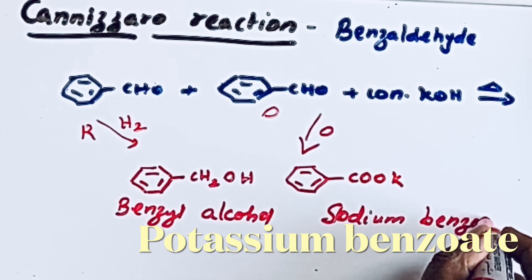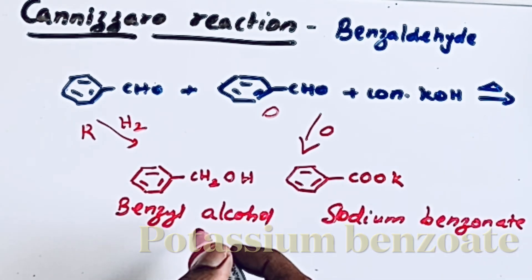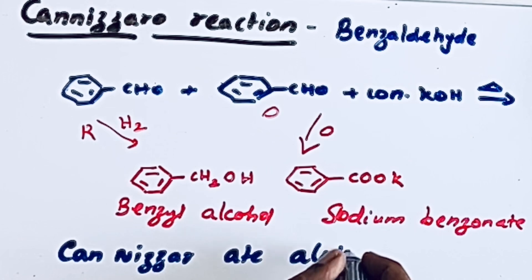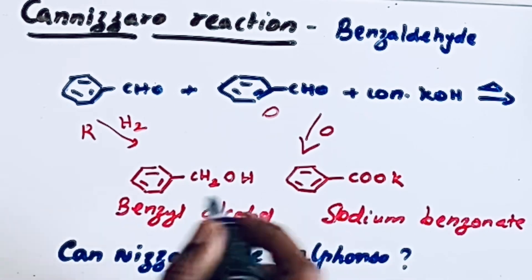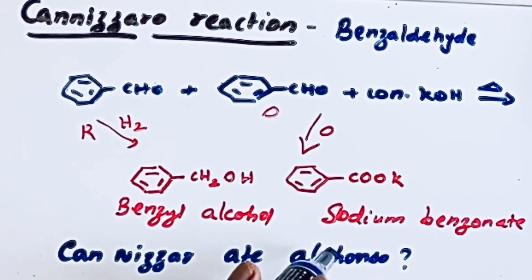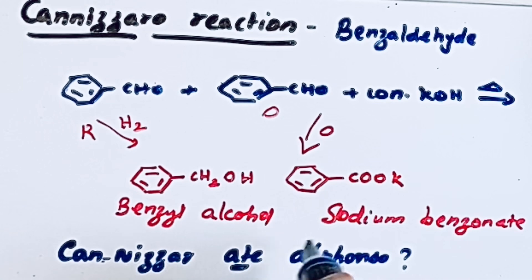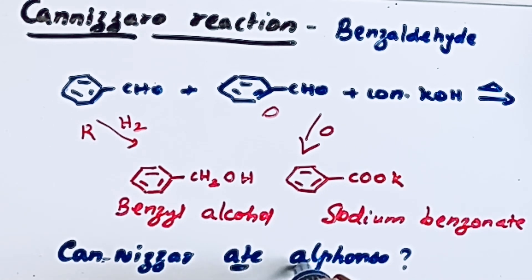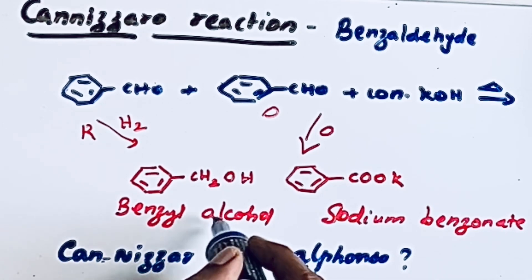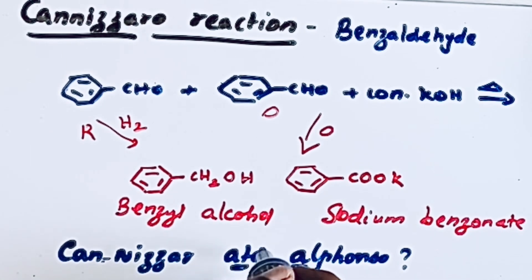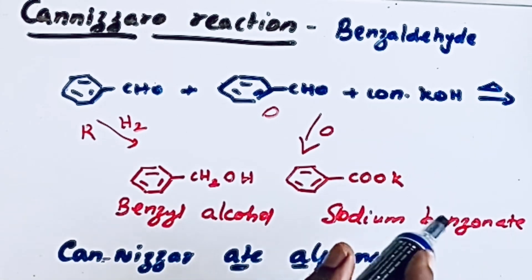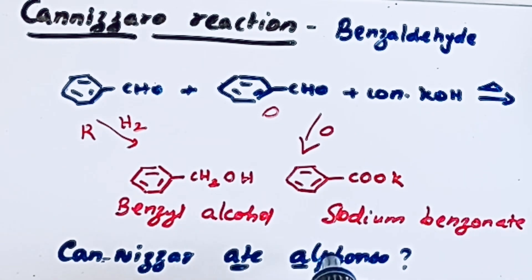Do you want an easy mnemonic to remember these products? Connect 'can' and 'nisar' — it represents Cannizzaro. In Cannizzaro reactions we get two products: 'sal' represents the salt of carboxylic acid, that is the carboxylate or benzoate salt; and 'al' represents the alcohol. So we get a salt of carboxylic acid — that is benzoate or carboxylate — and then the alcohol.